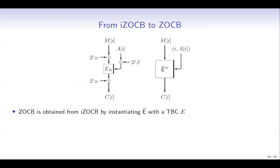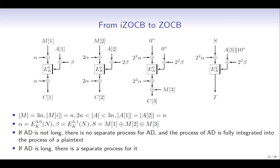ZO-CB is obtained from IZO-CB by instantiating the big tweakable block cipher tilde-E with the tweakable block cipher E. Alpha is used as input and output masks, and beta is used as the input mask for the tweak. They are obtained by encrypting the nonce, and we keep doubling the masks in order to realize a counter. We see that there is no separate process for AD; the process of AD is fully integrated into the process of plaintext.